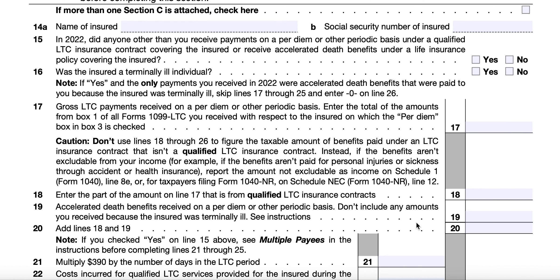If that does not apply, in Line 17 you'll enter the gross long-term care payments received on a per diem or other periodic basis — the total from Box 1 on all Forms 1099-LTC you received for the insured, where the per diem box (Box 3) is checked. As a cautionary note, do not use Lines 18 through 26 to figure the taxable amount of benefits paid under a long-term care insurance contract that is not a qualified contract. Instead, if the benefits are not excluded from income, report the income on Schedule 1, Line 8E, or if completing Form 1040-NR, go to Schedule NEC, Line 12.